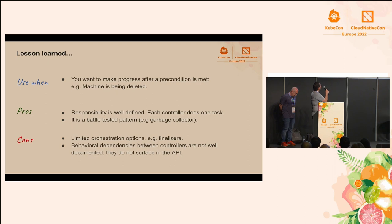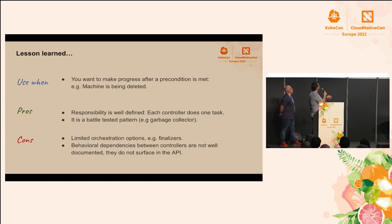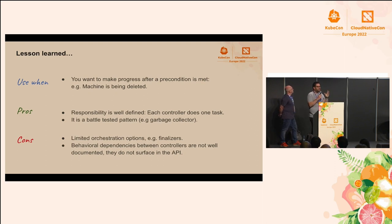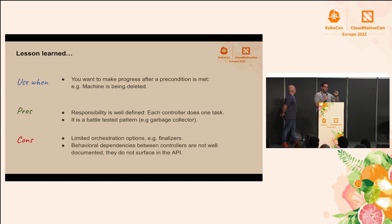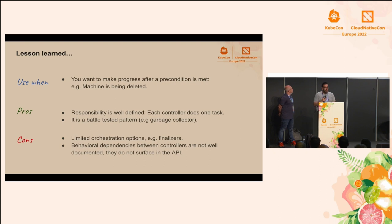Some lessons learned here: use this pattern when you want to make progress after a precondition is met — for example, when the deletion timestamp is non-null and you want to do a backup. The pros are that responsibility is very well defined, you are not adding complexity to the existing controller, and it's a battle-tested pattern widely used in Kubernetes. The cons are that you need to orchestrate somehow — you could add annotations or sequence your operations. Also, there are behavioral dependencies between controllers that are not very well documented, which we'll discuss later.